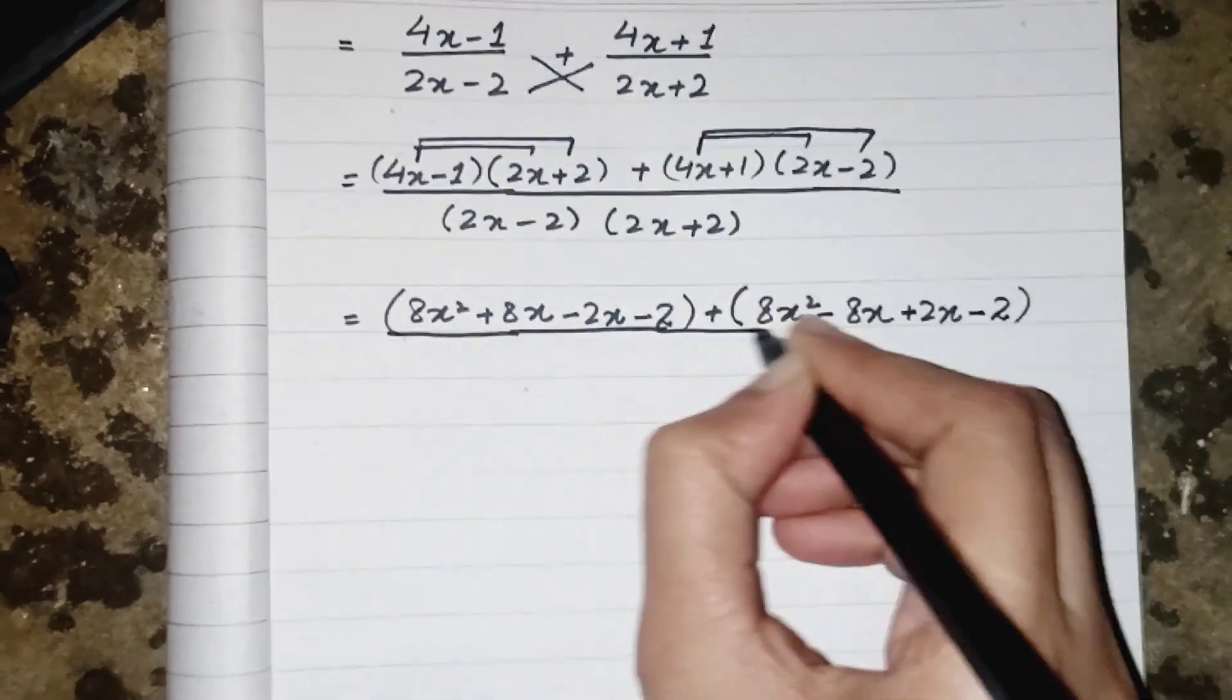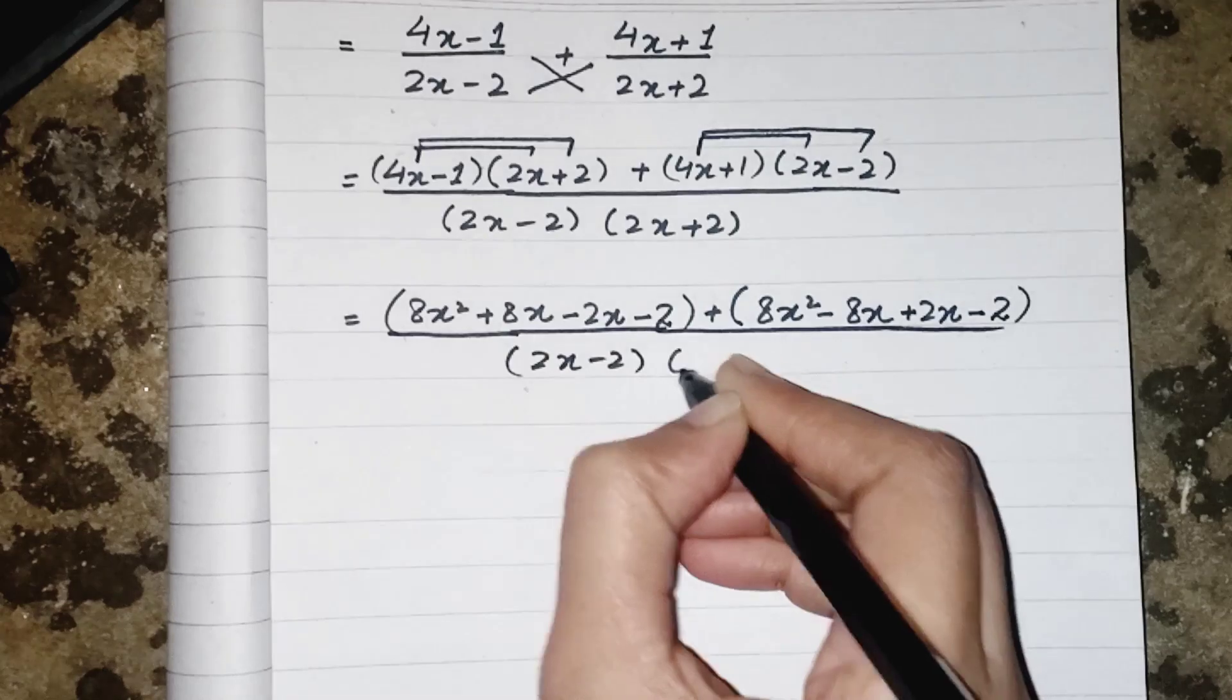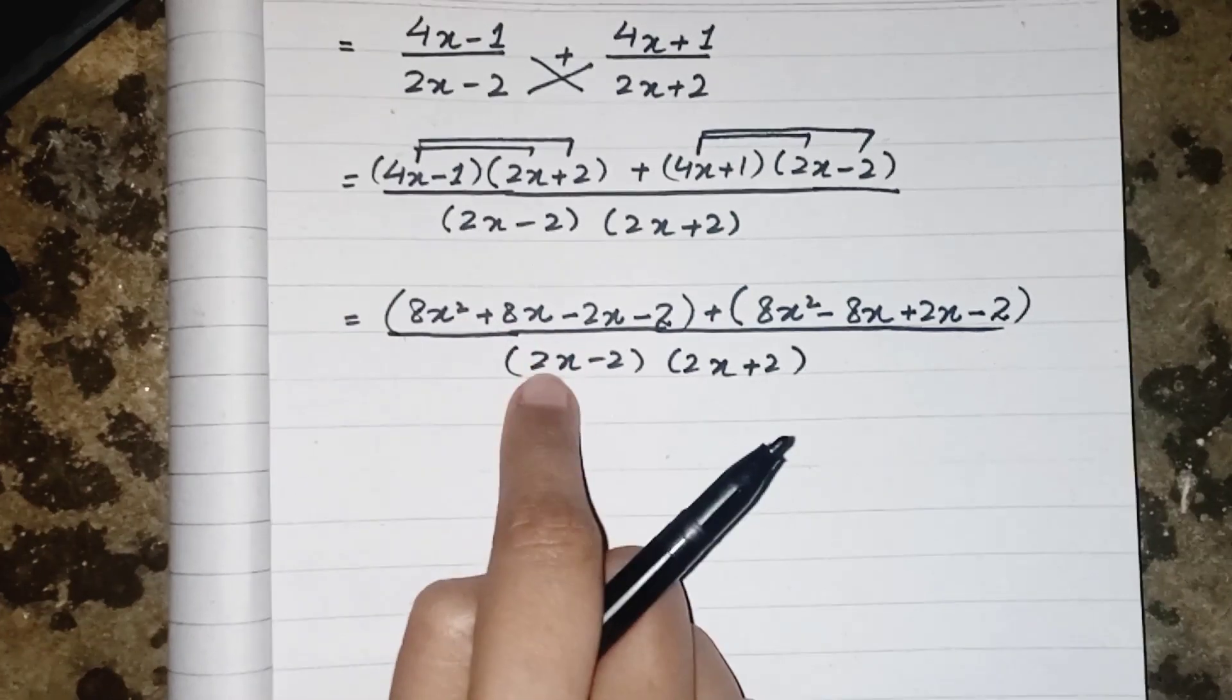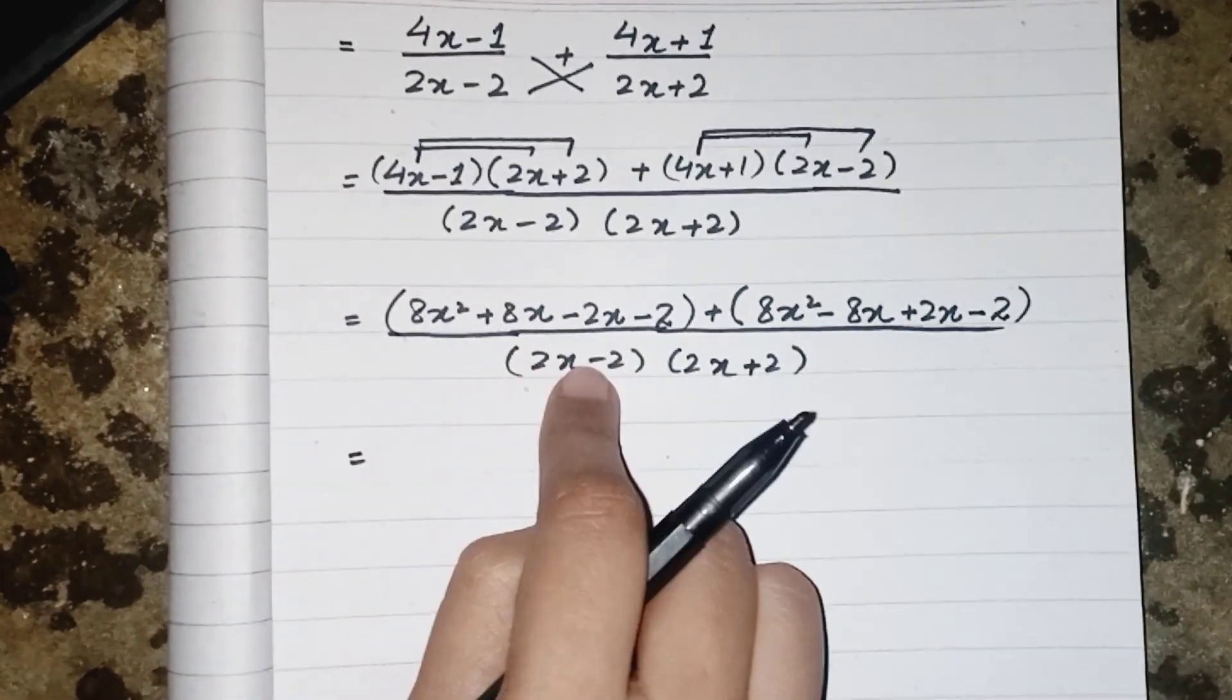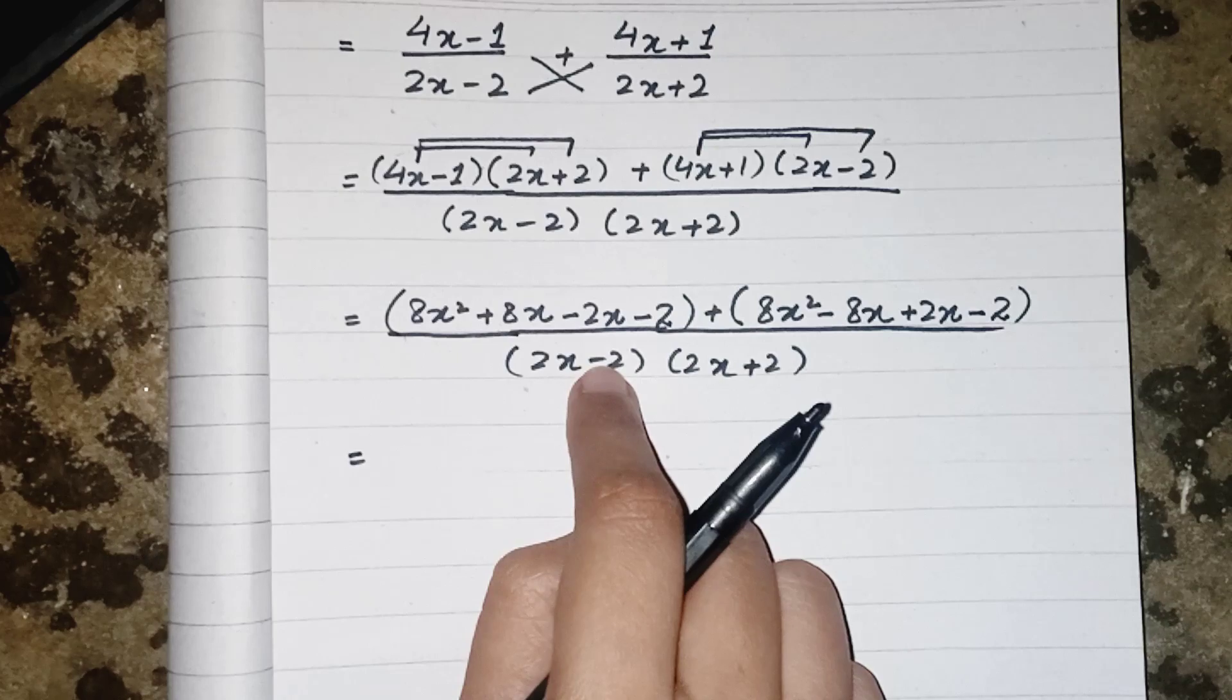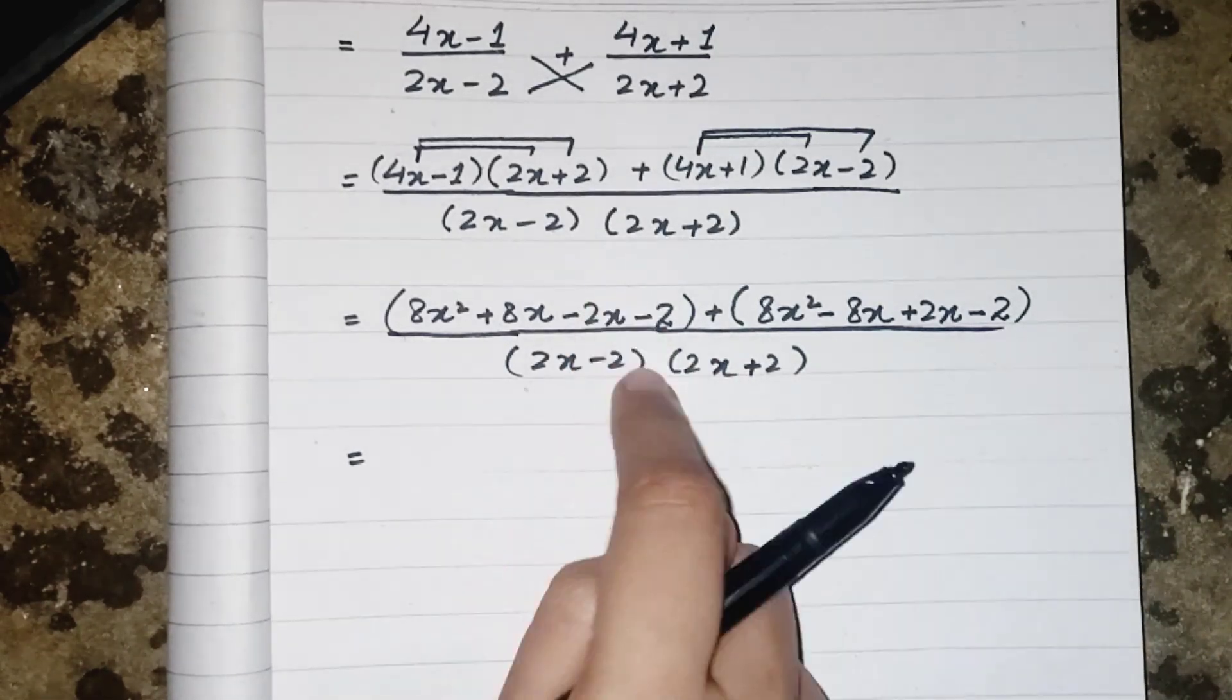Where in denominator, it's still 2x minus 2, 2x plus 2 because I am just focusing on numerator right now. We are not focusing on denominator. If you want to focus on both of them, so just write the numerators first and place empty space for denominator.